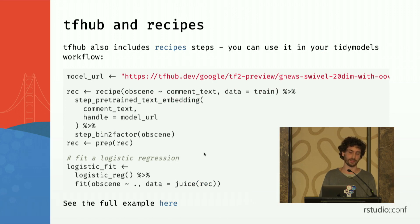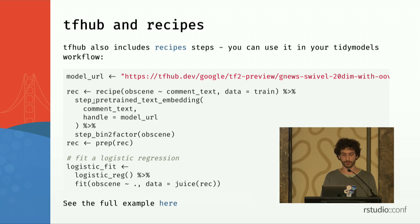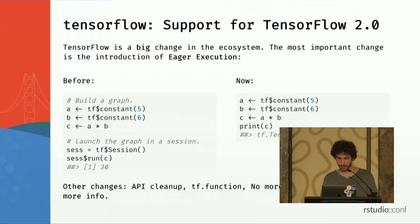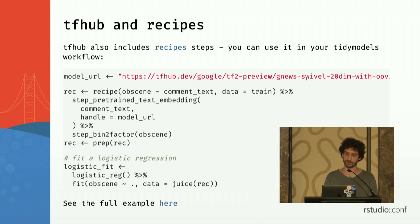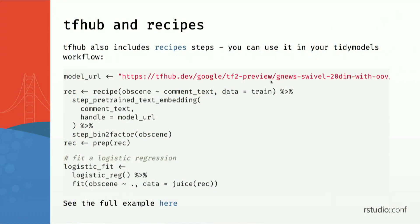tf.hub also provides a recipes integration with tidymodels recipes. If you are familiar with recipes, you have step functions, and there's a new step_pretrained_text_embedding. You can plug a pre-trained text model — for example, a model pre-trained on the Google News dataset, which is a very large dataset. It will convert raw text to a feature vector that you can use in your machine learning model, and then you can fit a logistic regression, for example, using this feature vector.